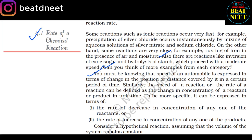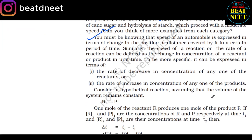The speed of an automobile is expressed in terms of change in the position or distance covered by it in a certain period of time. Similarly, the speed of a reaction or the rate of a reaction can be defined as the change in concentration of reactant or product in unit time. To be more specific, it can be expressed in terms of: (1) the rate of decrease in concentration of any one of the reactants, or (2) the rate of increase in concentration of any one of the products. Consider a hypothetical reaction — assuming that the volume of the system remains constant — where reactant R gives out product P.